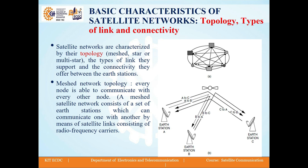In a meshed network topology, every node is able to communicate with every other node. As we can see in the figure, every node is connected to each other and each node is capable of transmitting and receiving signals. A meshed satellite network consists of a set of earth stations which can communicate with one another by means of satellite links consisting of radio frequency carriers. Figure A shows the meshed network topology, which includes a hub or central node along with different nodes.